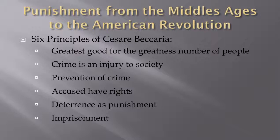Third, he looked at the prevention of crime — what methods society could put into place through deterrence, through well-established expectations, through education, that would help prevent crime. Fourth, he looked at the fact that the accused had rights: individual rights of expectation, due process, the ability to be heard, to be fairly judged, that facts drive decision-making, and that their status or economic wealth would not play a part. These were the early concepts of what you would now recognize as part of the American legal system.